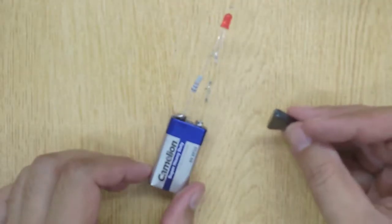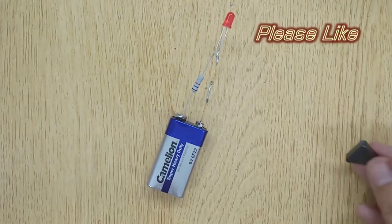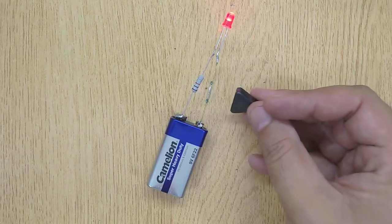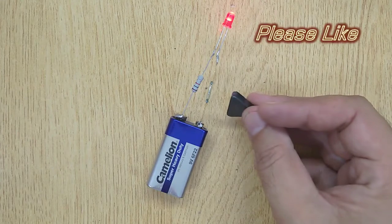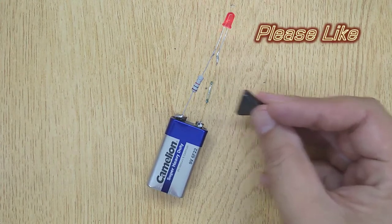Now let's check it. When I bring the magnet near the reed switch, the LED glows. And when I remove the magnet from the reed switch, the LED becomes dark.